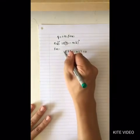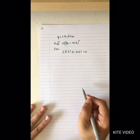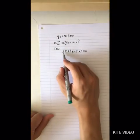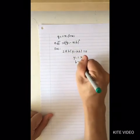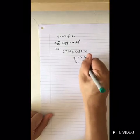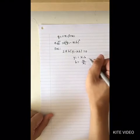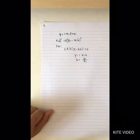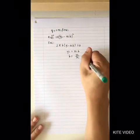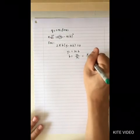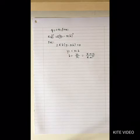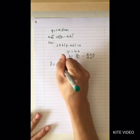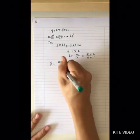Solving this, you get beta-hat equal to (sum of x_i·y_i) divided by (sum of x_i²). To find the distribution of beta-hat, you rewrite it as sum of x_i·y_i over sum of x_i², then expand y_i as x_i·beta plus u_i. The first term simplifies to beta, and the remaining term is (sum of x_i·u_i) divided by (sum of x_i²).